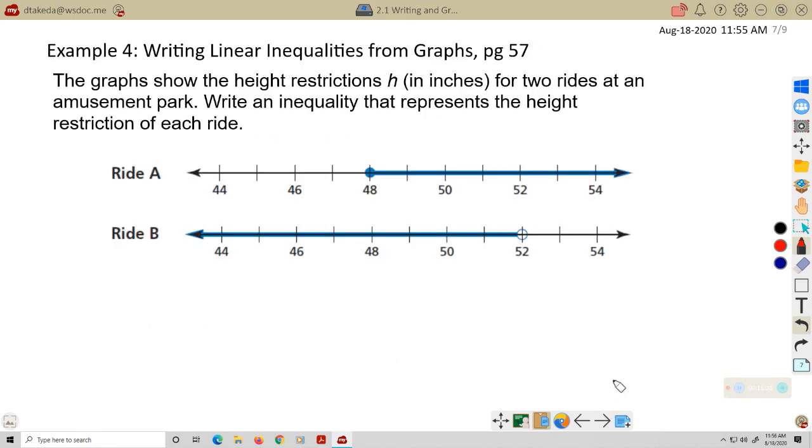Example 4, writing linear inequalities, this is on page 57. The graphs show the height restrictions, h, in inches for two rides at an amusement park. Write an inequality that represents the height restriction of each ride. Okay, well, this is pretty much like we just did, except kind of backwards. h is our variable, so this will be h, and I'm going to the right, so h is greater than or equal to 48.